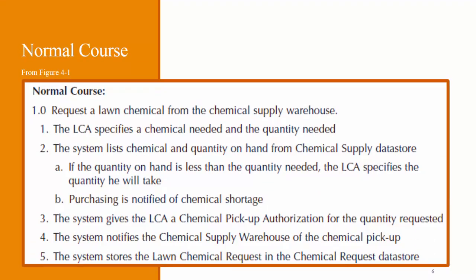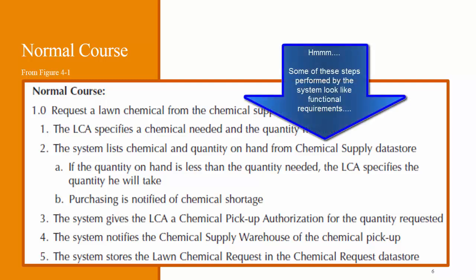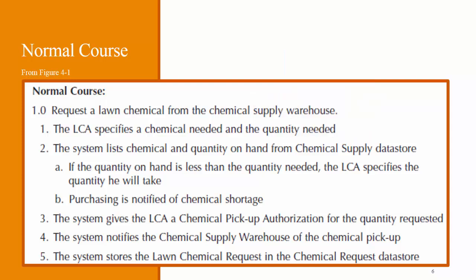Here are some examples of how to format these portions of the use case, taken from the textbook example of requesting a chemical. The normal course and the exceptions are listed in an outline format: 1, 2, 3, 4, 5. It's possible during the normal course to have different branches of decision logic. For example, under step number 2, the quantity on hand might be less than the quantity needed, so sub-steps A and B explain what happens in these alternative courses of action.